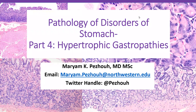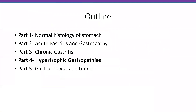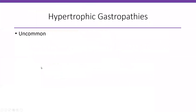Hi, this is pathology of disorders of the stomach, and this is part four. We're going to go over hypertrophic gastropathies in this part. We previously covered normal histology of the stomach, acute gastritis, gastropathy, and chronic gastritis, and in this part I'm going to cover hypertrophic gastropathies. Hypertrophic gastropathies are uncommon — they're rare disorders.